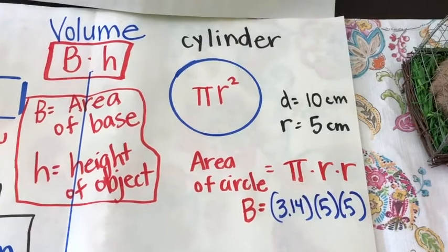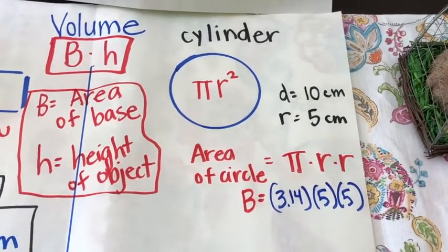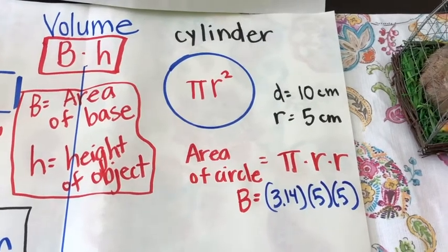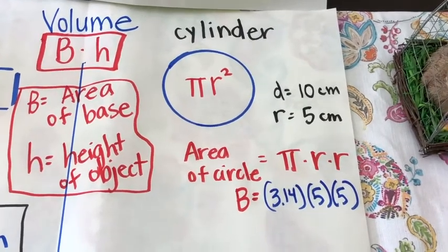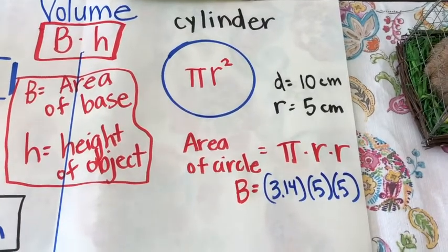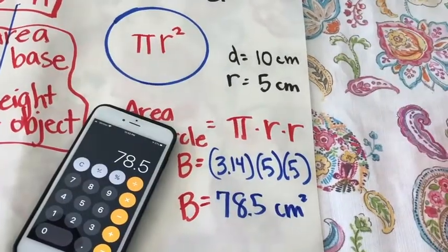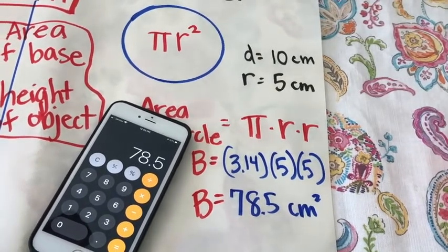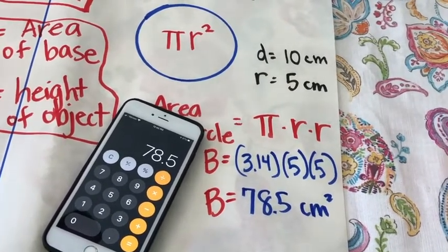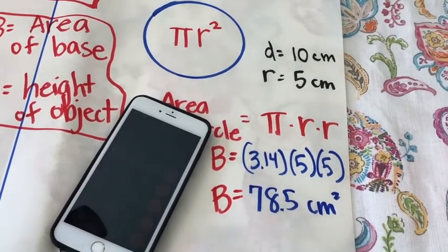The next step was to substitute the value for the radius into the formula. The area of a circle is pi r squared, so pi times r times r: the area of the base equals 3.14 times 5 times 5. When I put those numbers into my calculator I get 78.5 centimeters squared. We square the centimeters because we're talking about area.